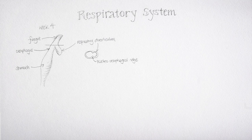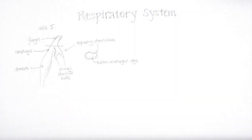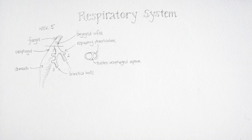First we see this respiratory diverticulum budding off, and to begin with it has a very wide opening back into the gut tube. Then we start to get tracheoesophageal ridges — longitudinal ridges which are starting to close off that connection. The respiratory diverticulum then starts to branch, dividing into two bronchial buds or lung buds, and the tracheoesophageal ridges are going to join together to form a septum.